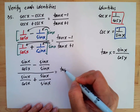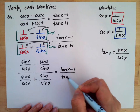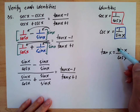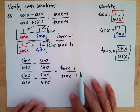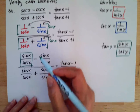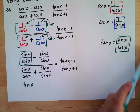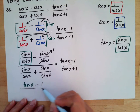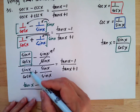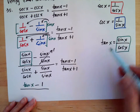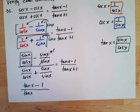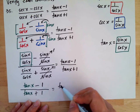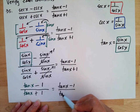This simplifies to (tan x minus 1) over (tan x plus 1), since sine x over cosine x equals tan x, and sine x over sine x equals 1. So we have tan x plus 1 in the denominator and tan x minus 1 in the numerator, which means both sides are equal to one another. The identity is verified.